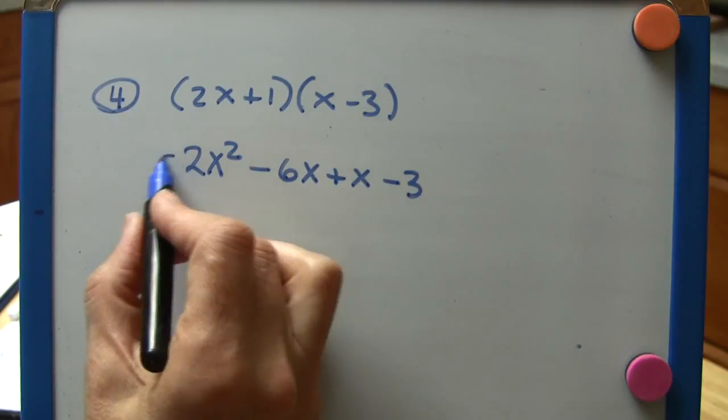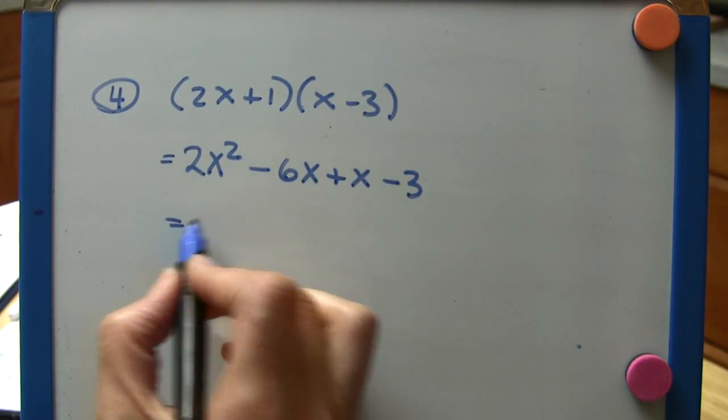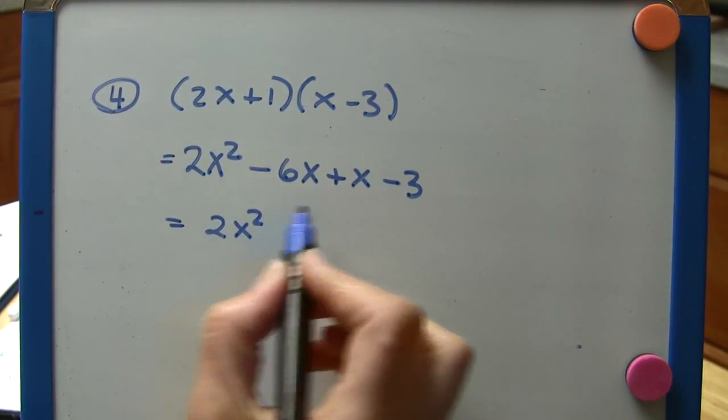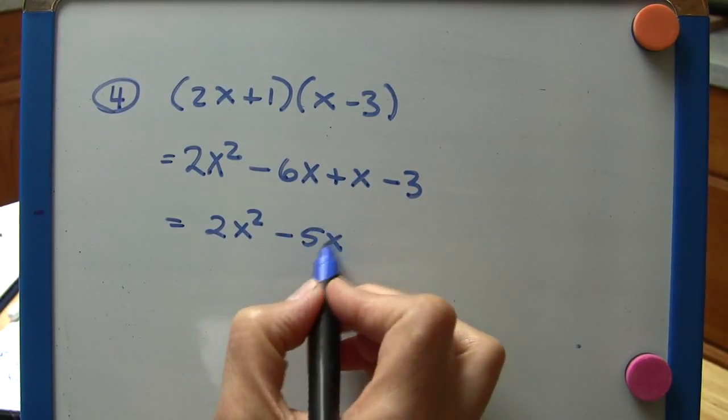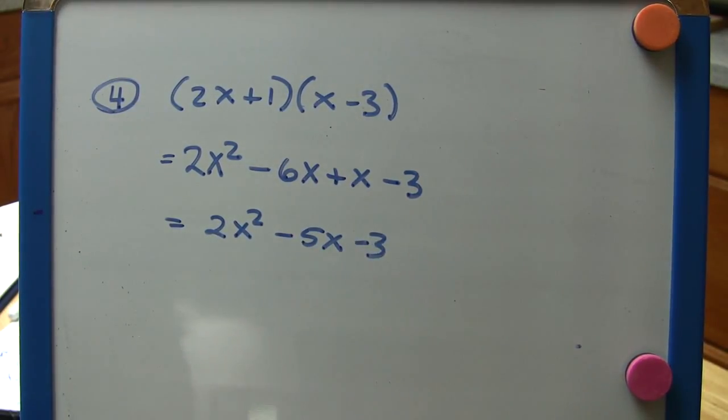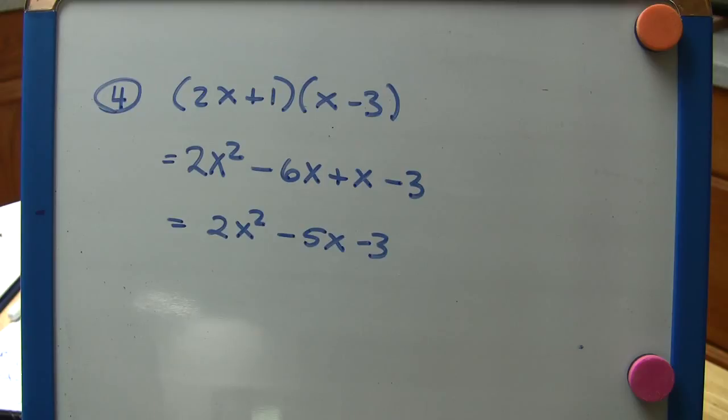So we have to take this step to combine the middle terms. 2x squared, well minus 6x plus x is minus 5x, and minus 3. So I hope you've found this to be a helpful introduction to the FOIL method. Thanks for watching.